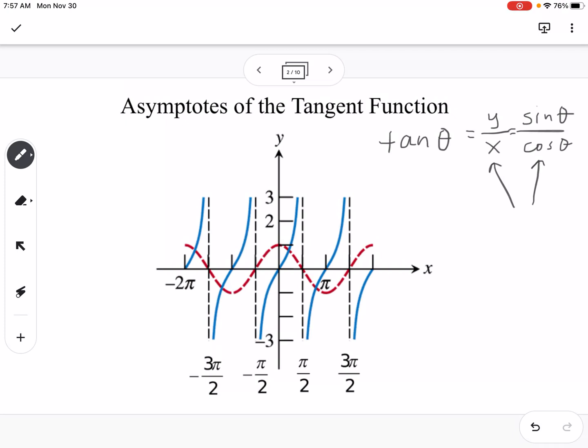So if we think of our unit circle here, here's (1,0), (0,1), (-1,0), and (0,-1). We know that our cosine value, or our x value, is 0 right here, which would be pi over 2, and we know it's also 0 down here, which would be 3 pi over 2.